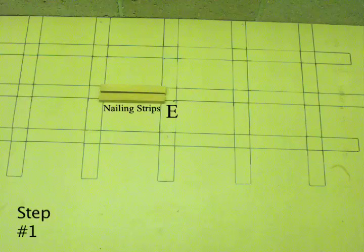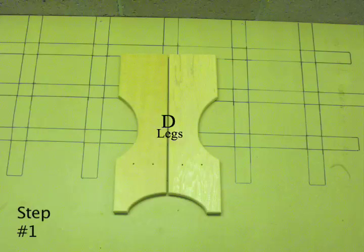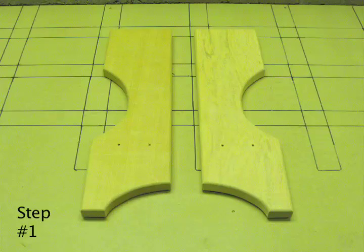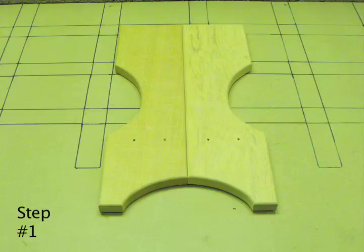You will need the nailing strips (E) and the leg pieces (D) for this step. Arrange two of the leg pieces together as shown. Make sure that the top of the boards are flush and line up evenly.